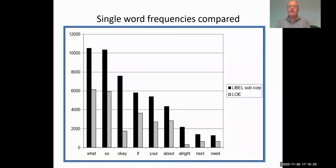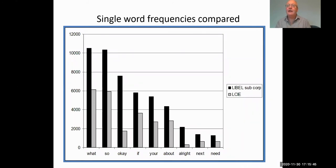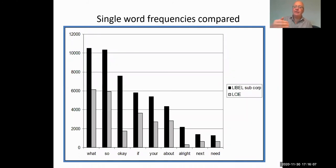Our top 10 most frequently occurring words were discourse markers like 'so' and 'okay,' plus question words. These small words are actually very important in educational discourse because they often mark transitions between one part of a lesson or lecture and another. Words like 'okay' do a huge amount of interactional work in classroom discourse — it's not always the same work. 'Okay' can be used to grab attention, to mark a transition, to give feedback. Discourse markers are an important group.